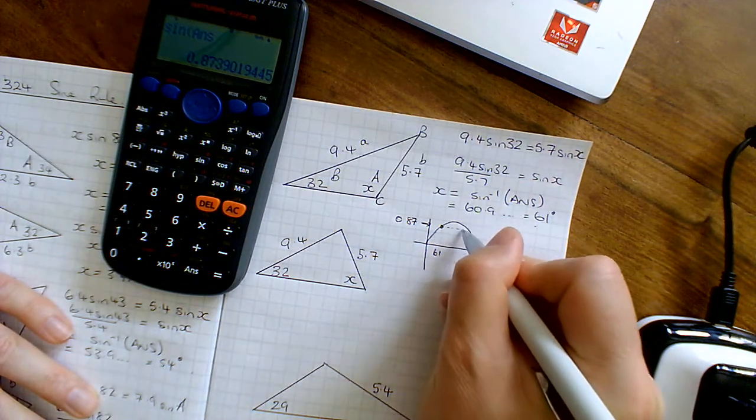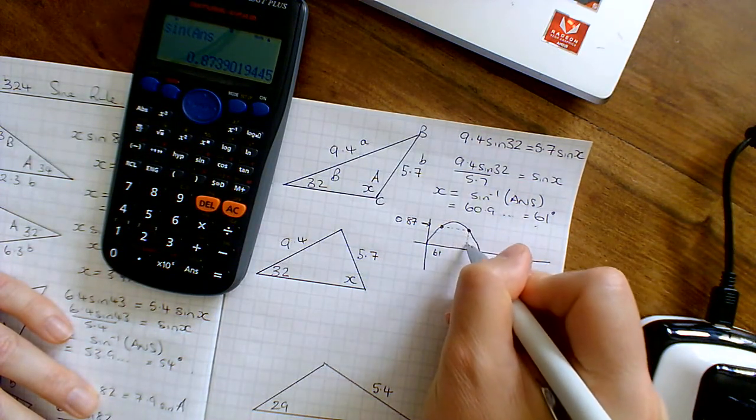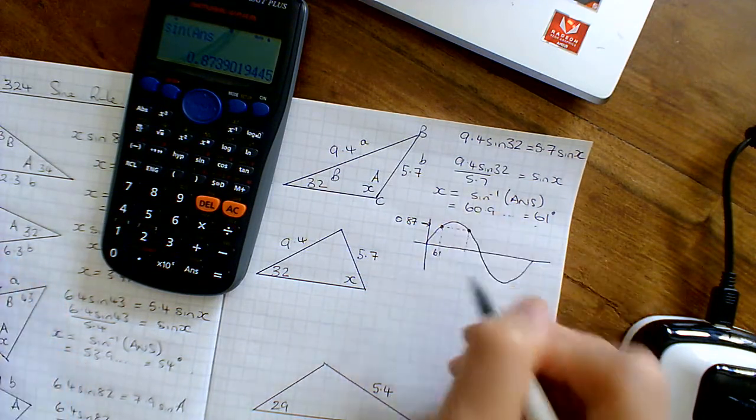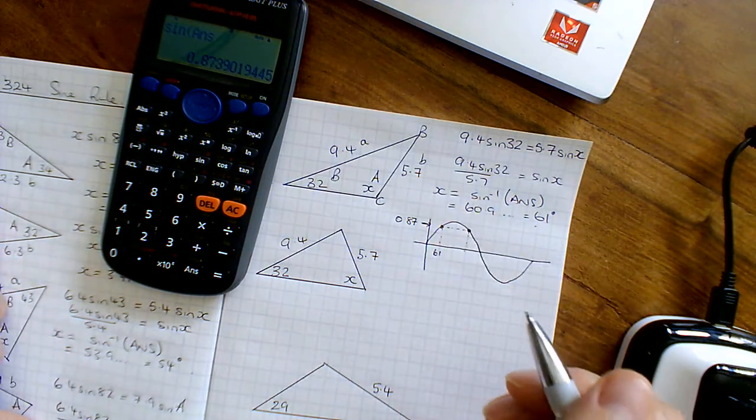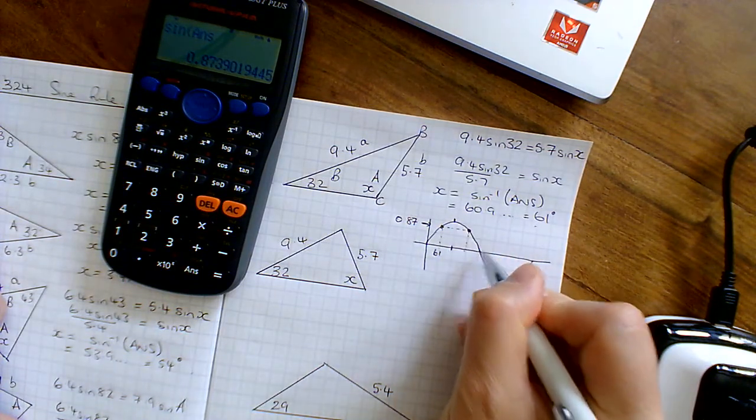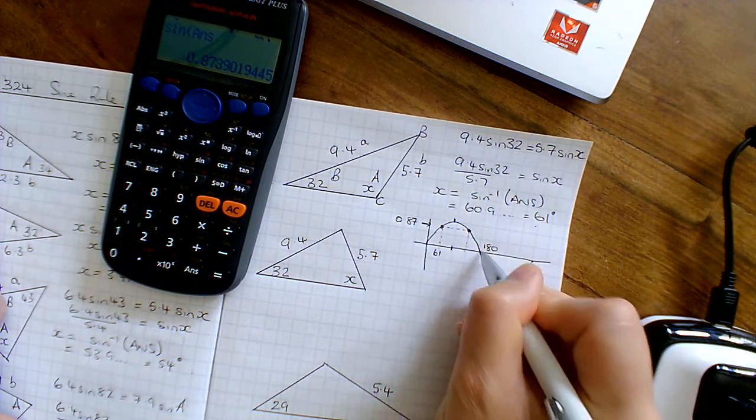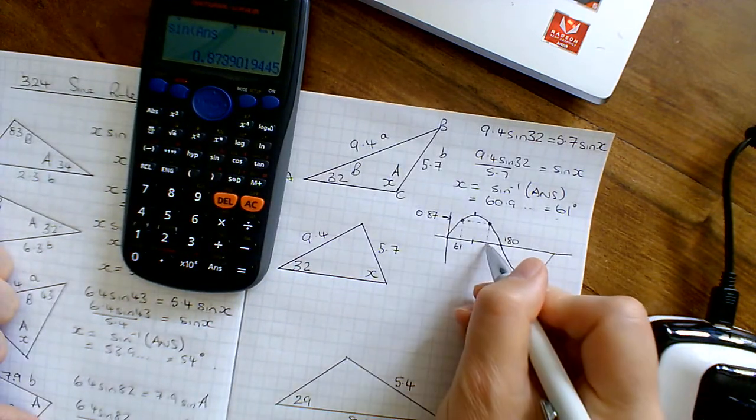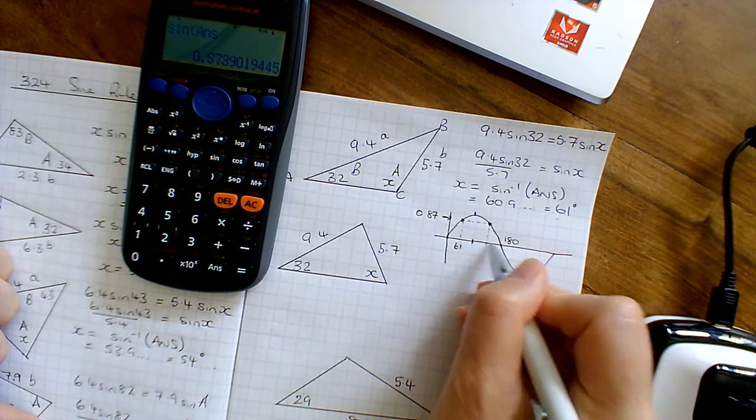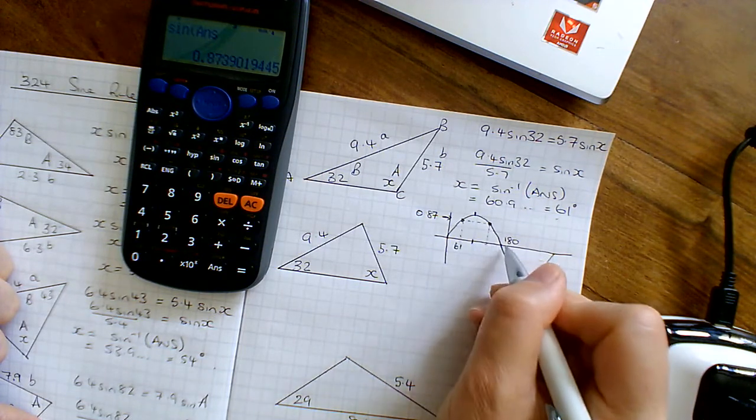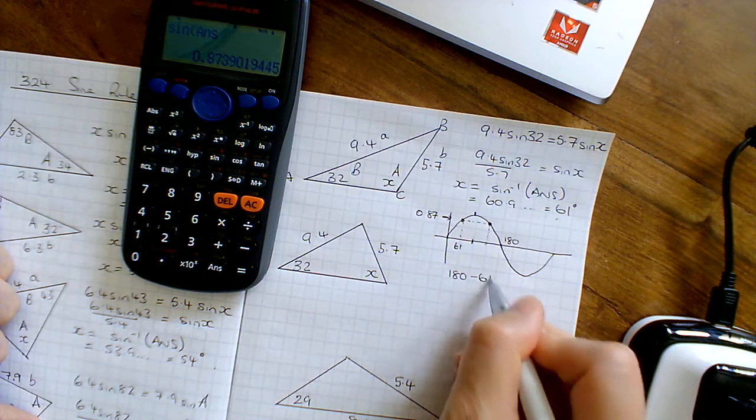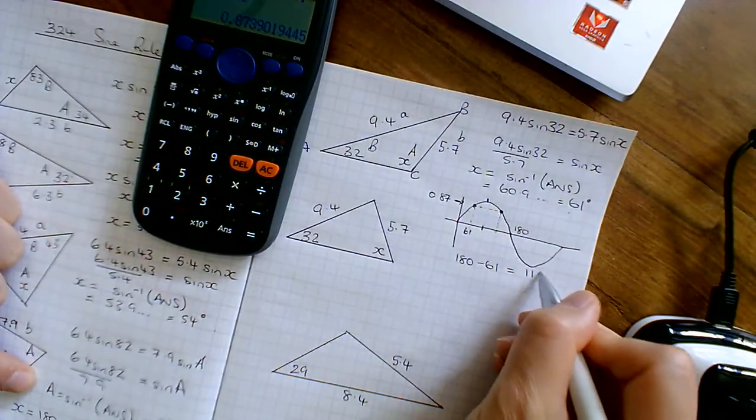And what we did was, if I do sine of that answer where it was 0.87, we found this answer here to be 61. In fact, if you go along you also hit the curve here, so there's an answer down here as well which will be, and it's symmetrical. The way the curve works, it goes 0, that's where 90 is, and that's 180 degrees. This answer here is the same distance away from 0 as that one is. So this answer is 180 take away 61, which is 119 degrees.